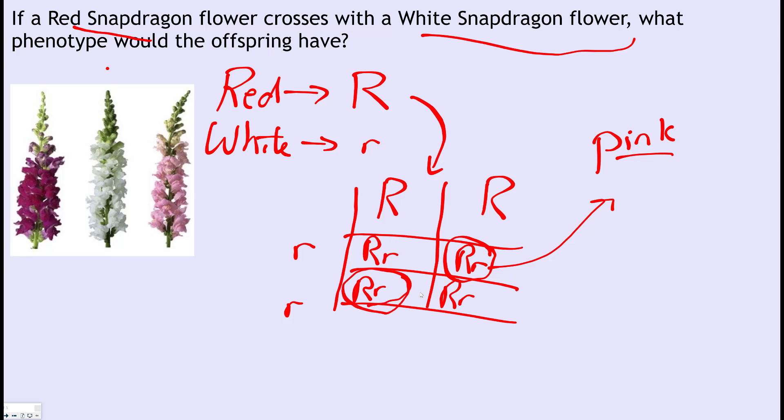If you were to take the first generation, this is my F1 generation, and if we were to cross it with itself or with another plant from the first generation, let's see what happens. That's our second question: if the F1 generation offspring were to cross with each other, what would the genotype and the phenotype be for the F2 generation?